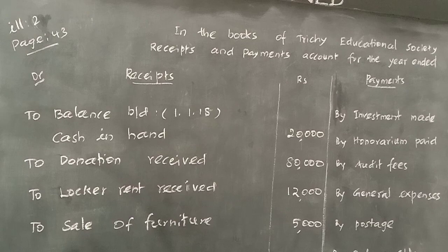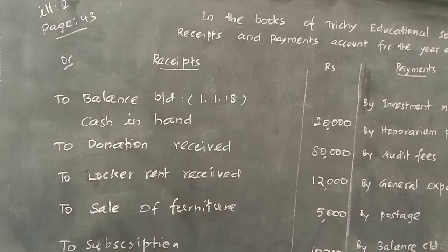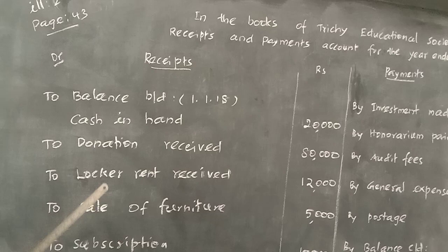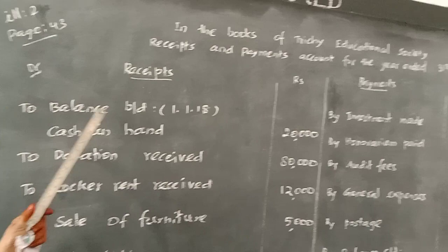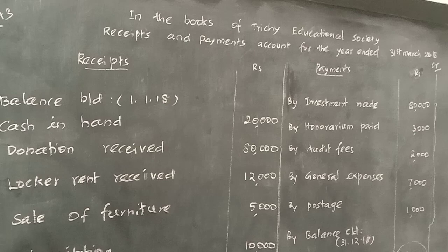Now, first illustration. Next we will see the second illustration. Book page number 43. First read the sum and find out which one is receipt and which one is payment. All the receipts you have to enter on the debit side, all the payments you have to enter on the credit side of your notebook. Write the heading: In the book of Kirichi Educational Society, Receipt and Payment Account for the year ended 31st March 2018.